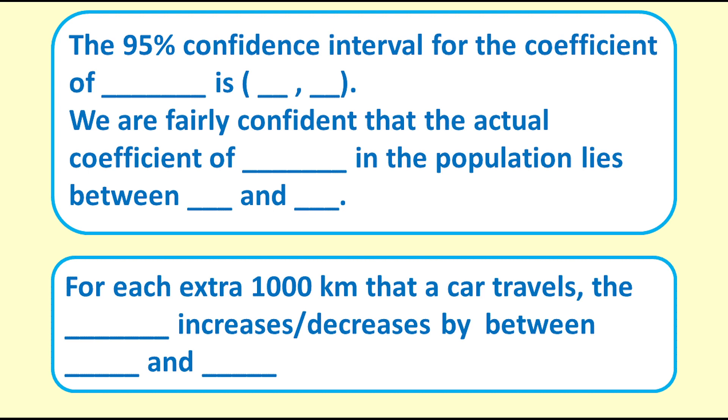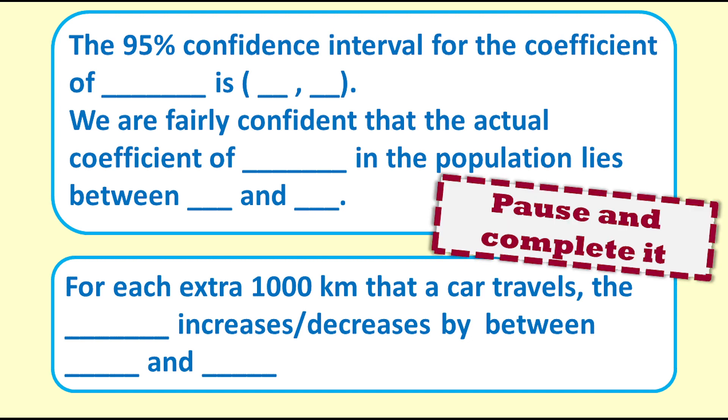If you found that challenging, here's a framework that might help. The 95% confidence interval for the coefficient of [blank] is [number] to [number]. We are fairly confident that the actual coefficient in the population lies between two different numbers. For each extra 1000km that the car travels, [dependent variable] increases or decreases by between [values]. Give it a try. Now I'll fill it in.